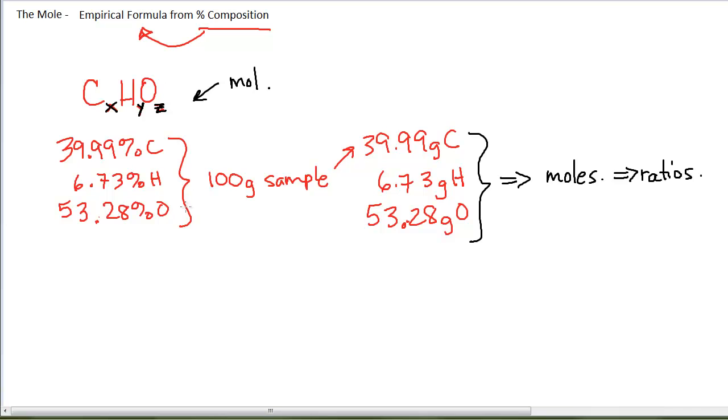If I'm given percent composition by mass, assuming a 100 gram sample means that's how many grams of each element I have, convert that grams to moles for each one, and then mathematically find out what those ratios are by dividing.